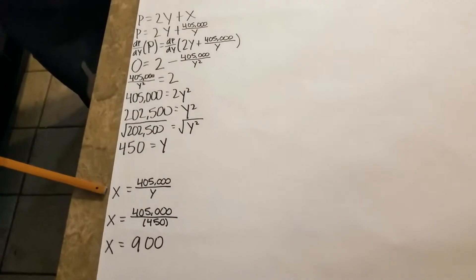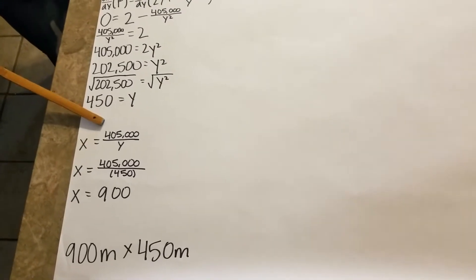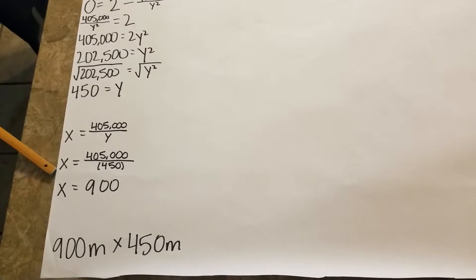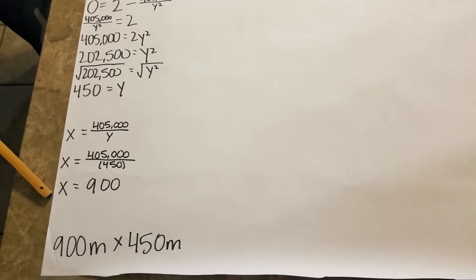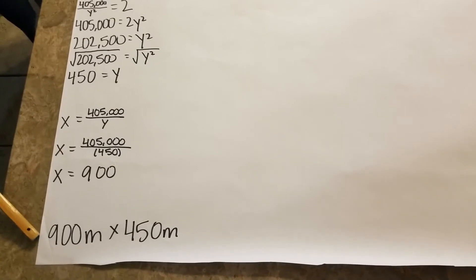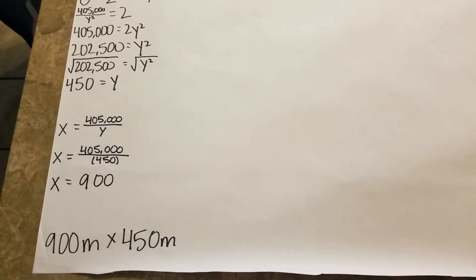For the X value, we're going to plug in from our original equation, X equals 405,000 over Y. And when we now plug in the correct value for Y, we will get X equals 900. The final answer for this problem is 900 meters times 450 meters. Thank you.